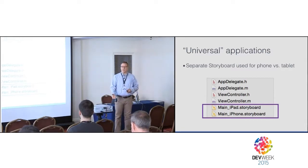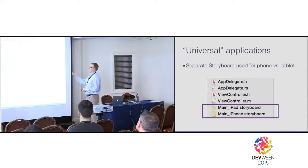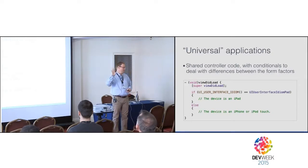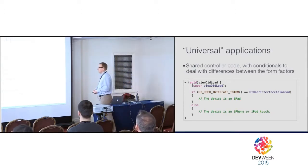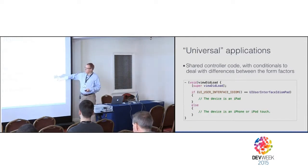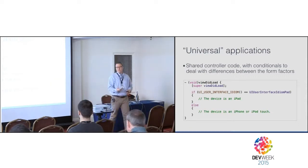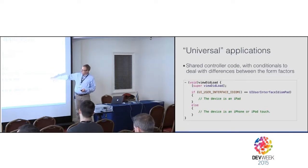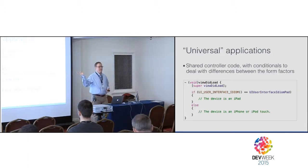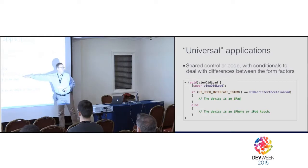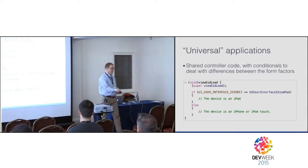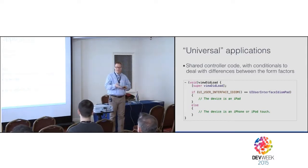The universal application template was created by Apple so that we could have one binary distributed to both device form factors. It worked by having two different views — a storyboard for the iPad and a storyboard for the iPhone — but sharing a single view controller to drive the logic. You would typically sprinkle your code with statements checking the device idiom: is it an iPhone or an iPad? And then tailor the logic to drive either the tablet or the phone display.